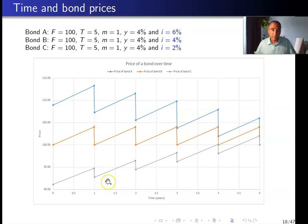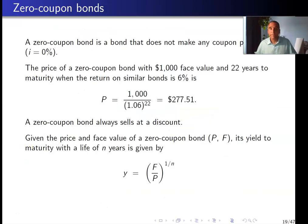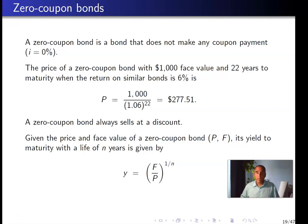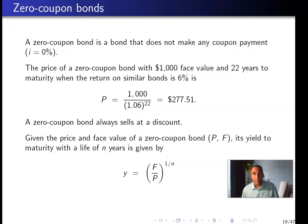Bond valuation, second part of the lecture. A zero coupon bond has a coupon rate of zero, so the bond does not make any coupon payment — it has to sell at a discount. If a bond promises a face value of $1,000 in 22 years and the yield to maturity for bonds with the same risk characteristics is 6%, the price of the bond is $277.51.